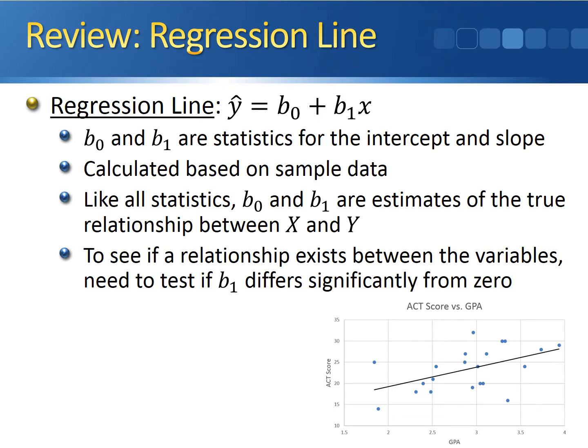Taking a look at the scatter plot between GPA and ACT score, we can plot the regression line. We found last class that the equation of the regression line is y-hat equal to 4.58 plus 10.07x. But the question that we really need to answer here is, is 10.07 significantly different from 0?